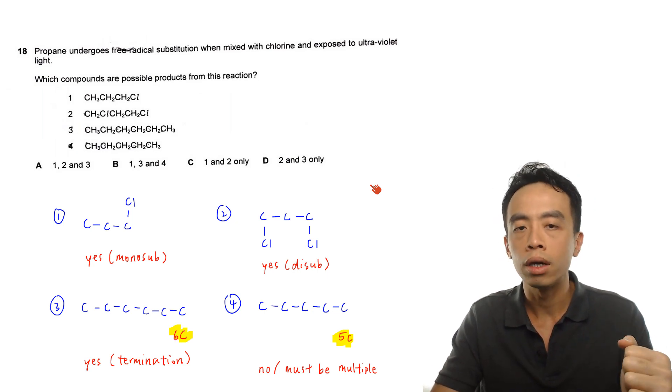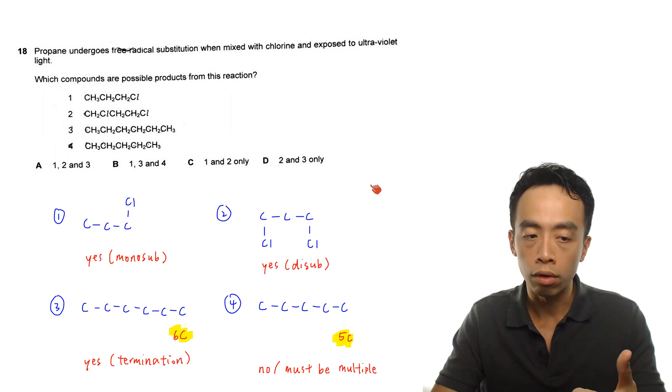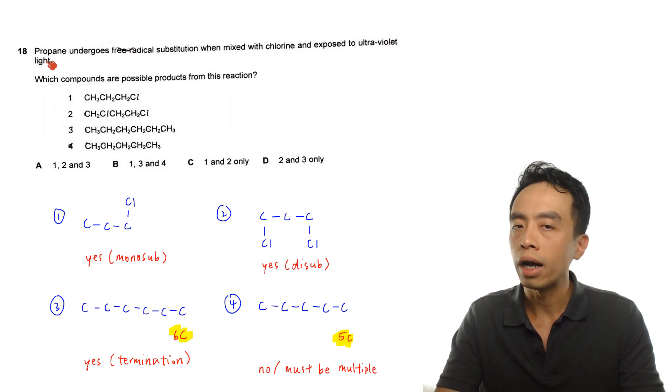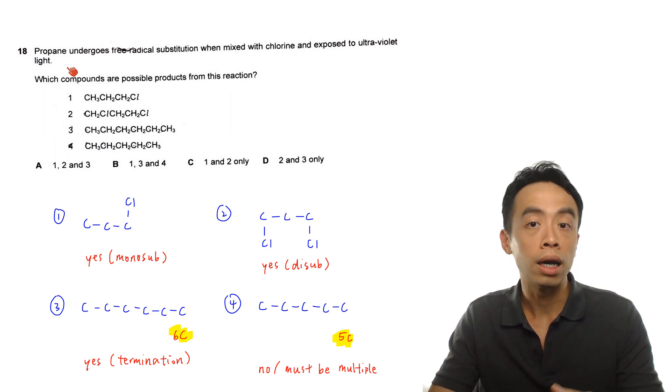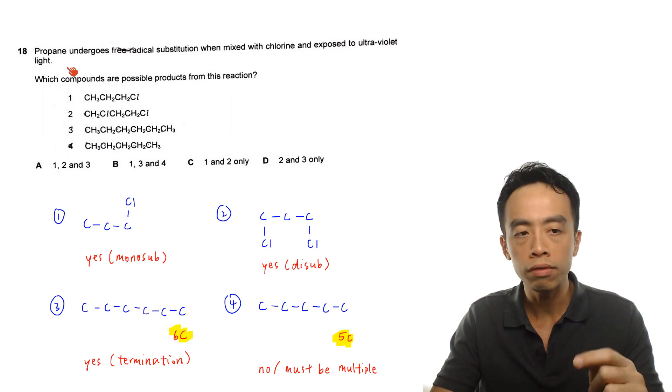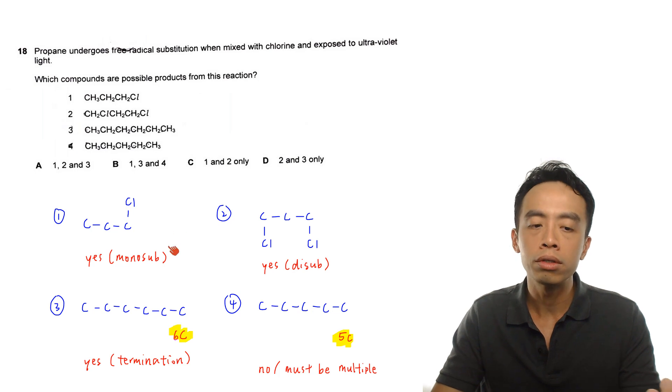So if I consider the options 1, 2, 3, and 4, now can I form this 1-chloropropane? Then definitely this is possible, right? Because this type of reaction is called a free radical substitution, where I'm substituting some of the hydrogen in propane with chlorine. So I can form a monosubstituted product, a disubstituted product, or any extent of substitution. So definitely the first guy, it is possible, this is due to monosubstitution.